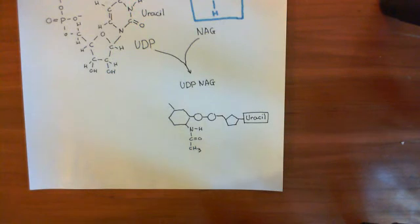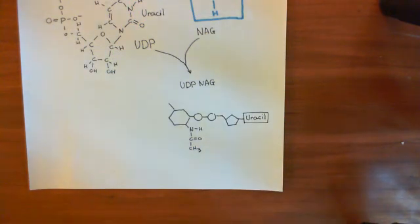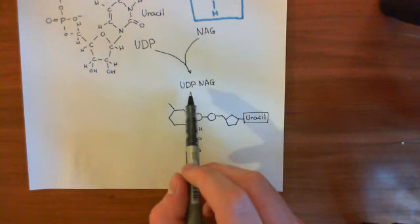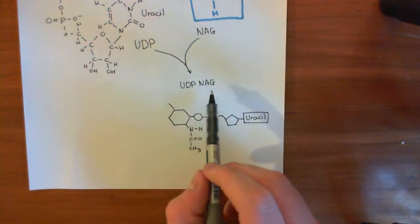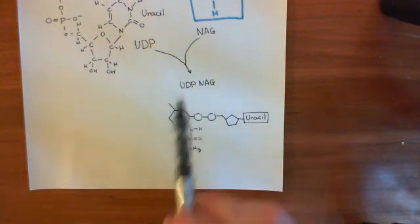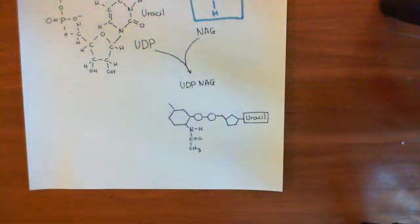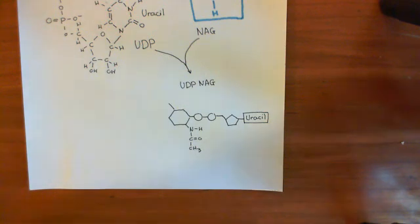What we are now going to do is convert this UDP-N-acetylglucosamine into UDP-N-acetylmuramic acid, and we'll continue this discussion in the next video.